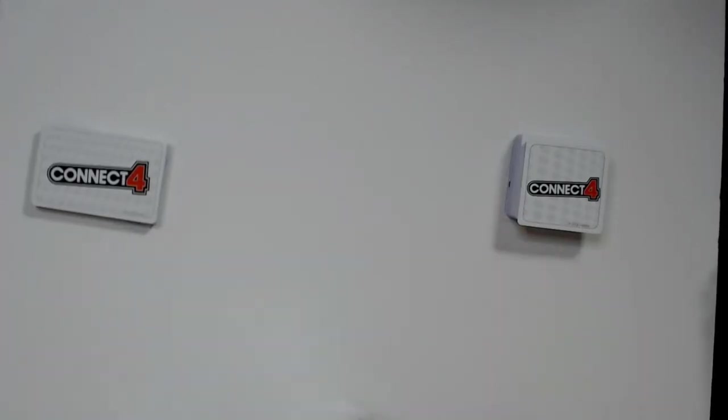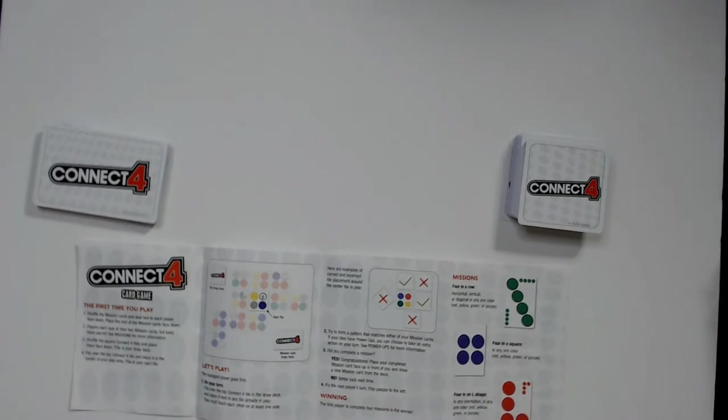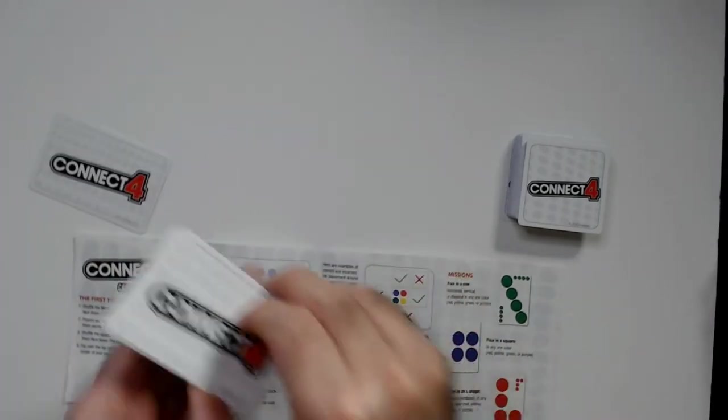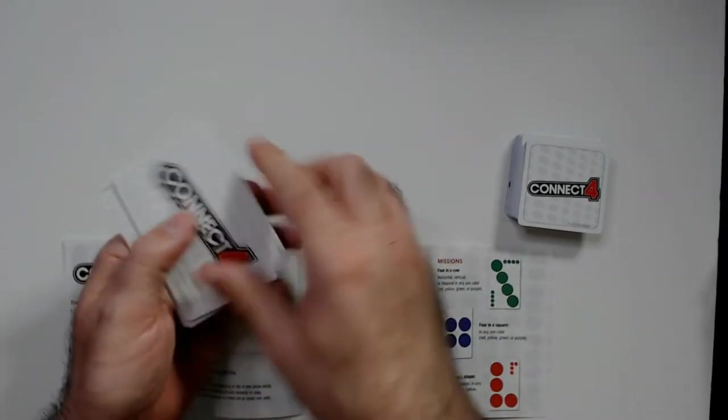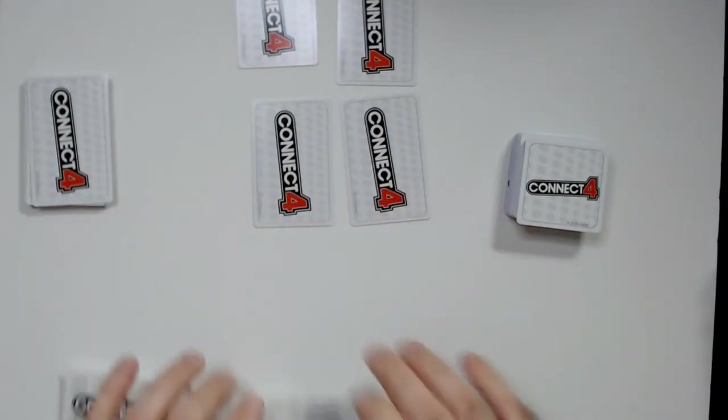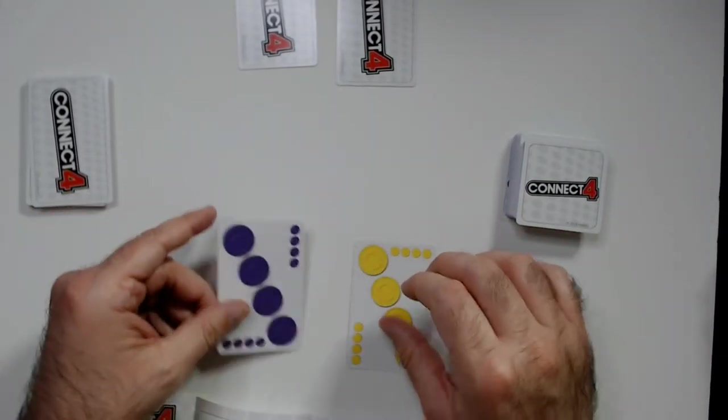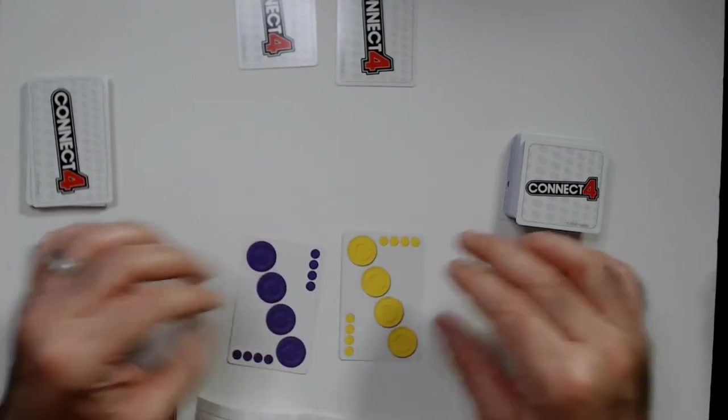Here are the game components. The game's pretty straightforward with instructions here. Each person is going to get two cards from this draw deck - these are your mission cards. Keep them secret from the other players. So we'll just line up. I have that and purple two diagonals.